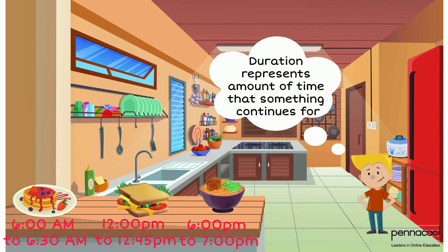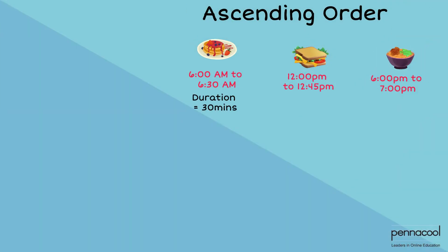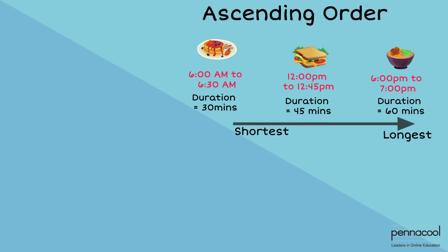Duration represents the amount of time that something continues for. Can you arrange Jadon's meals in order of ascending duration? This means from shortest to longest.